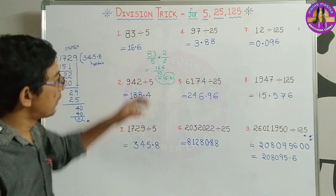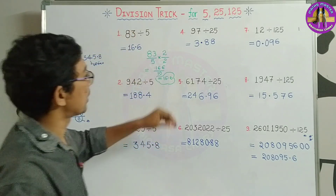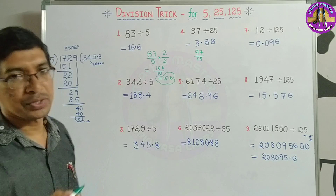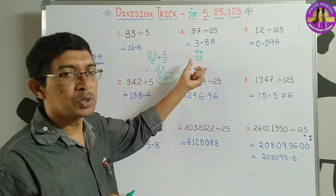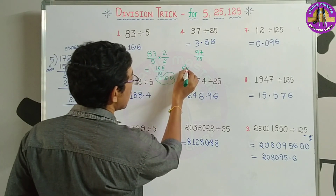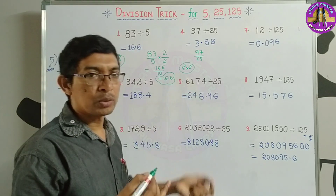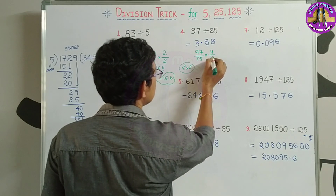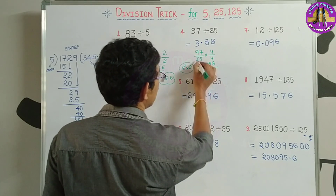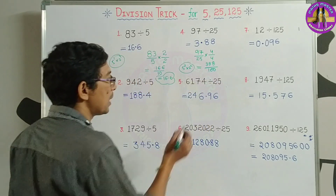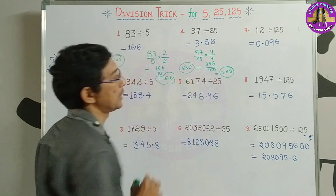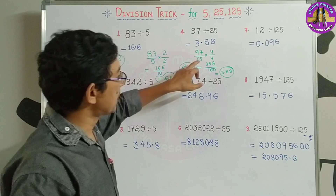So the answer becomes 16.6. 25 is 5 squared. We will multiply by 10 multiples. We will multiply by 2 squared. 5 squared requires multiplying by 2 squared, which means 4. Into 4 by 4: 4 sevens are 28. 4 nines are 36 plus 2 equals 38. 25 fours are 100. So here we have 100, which has 2 zeros. So keep decimal point after 2 digits from back onwards: 3.88. So it is involved in this trick. If we multiply 5 squared, we multiply 2 squared.